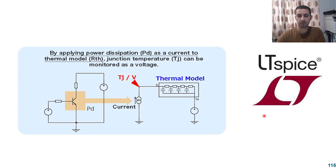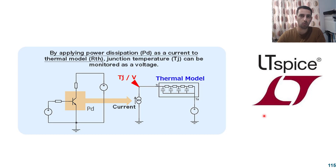Hi, this is a continuation for Power Electronics Lectures. In the previous lecture we discussed the thermal consideration when we have a switch dissipating power as heat and the junction temperature starts rising up, and we designed a heat sink and cooling system to make sure that the junction temperature doesn't exceed the maximum limit. So today we are going to validate the concept again but using LTSpice.